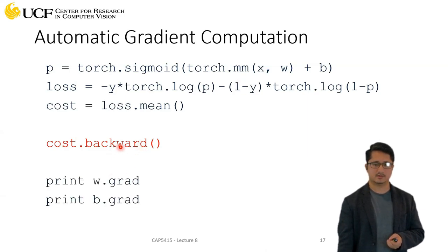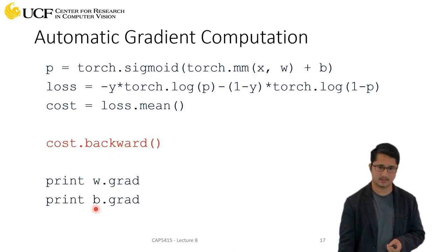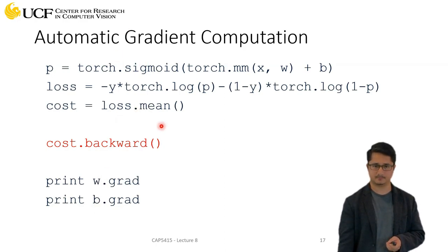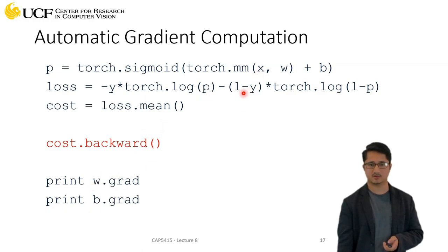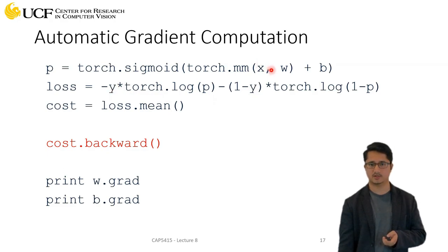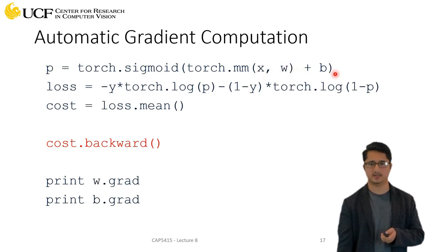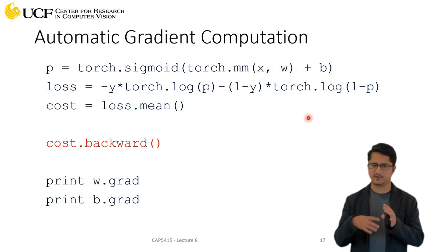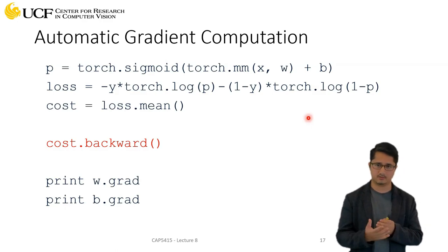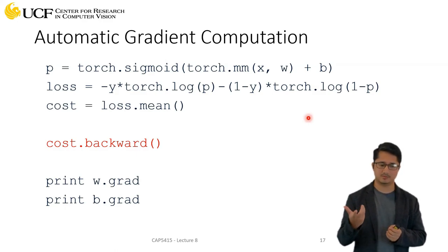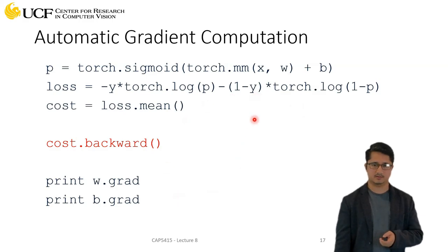Once you run backward(), you can see the values of weights and biases. When you train over different samples, these values will change. Ground truth y and input x are provided; the only things being trained are the weights and biases. This is a simple formulation of how to train a neural network using PyTorch, and you can easily generalize this to more complex CNNs.